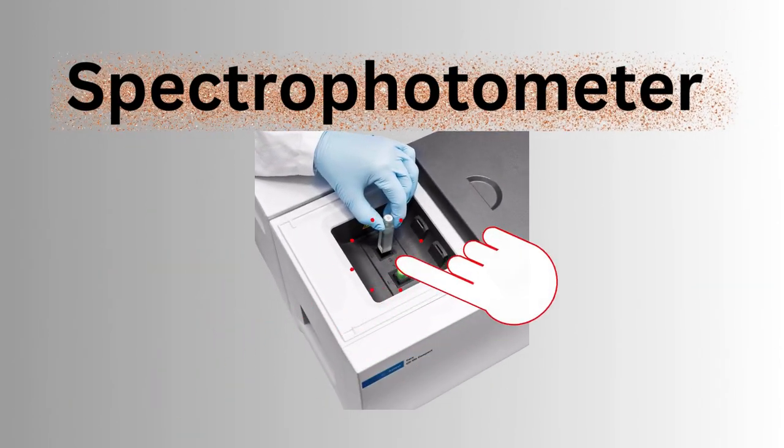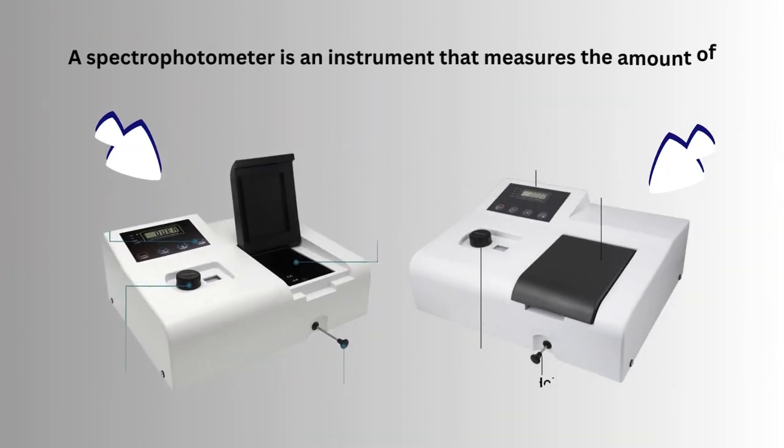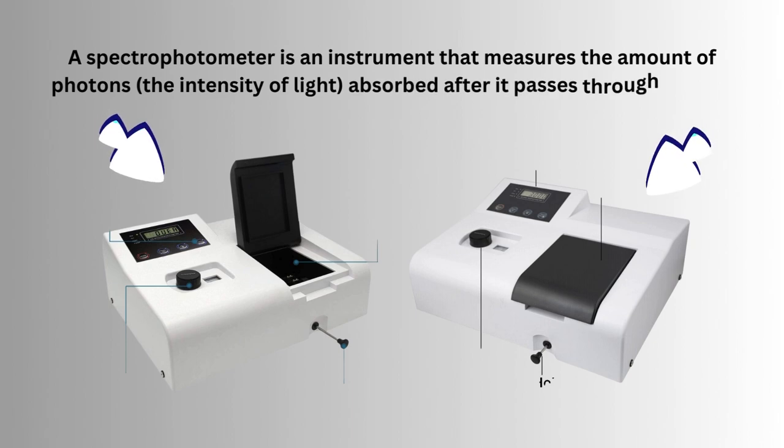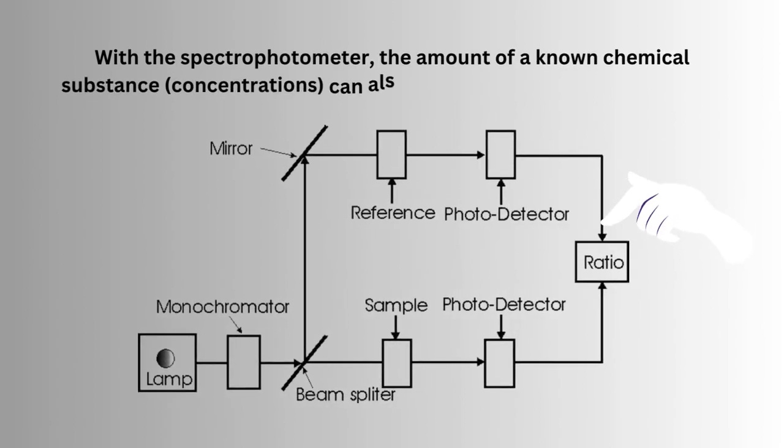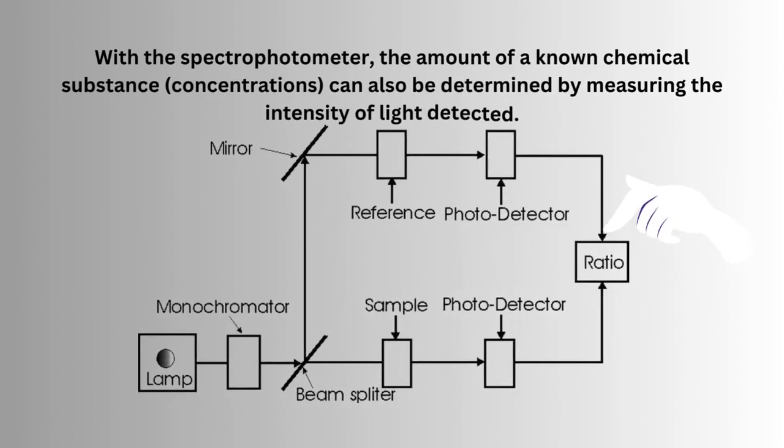Spectrophotometer. A spectrophotometer is an instrument that measures the amount of photons, the intensity of light, absorbed after it passes through a sample solution. With the spectrophotometer, the amount of a known chemical substance (concentration) can also be determined by measuring the intensity of light detected. A lamp provides the source of light.